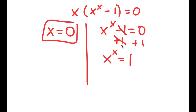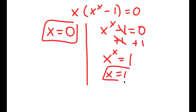Because x has to be the same number on both sides, what number to the power of itself equals 1? That's going to be 1, because 1 to the power of 1 equals 1. There's no other number where raising it to the power of itself gives 1, so x equals 1 is the only solution to this equation.